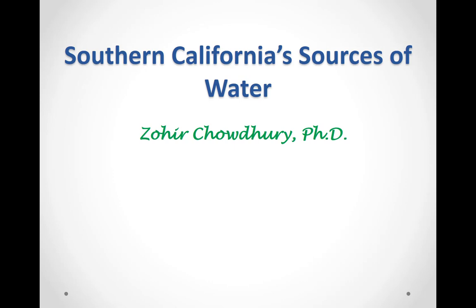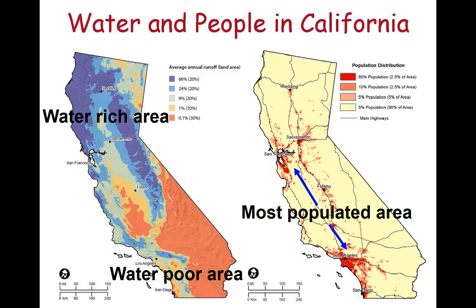Hello everybody, my name is Zohar Choudhury, and today we'll talk about Southern California's sources of water. In order to understand the sources of water for Southern California, it is extremely important to understand the population distribution.